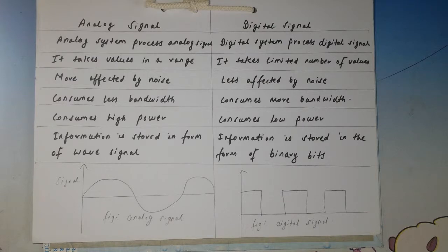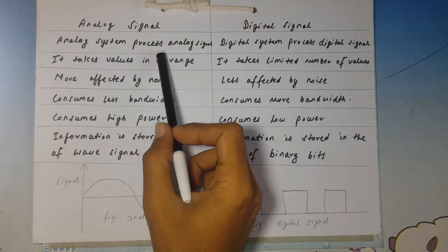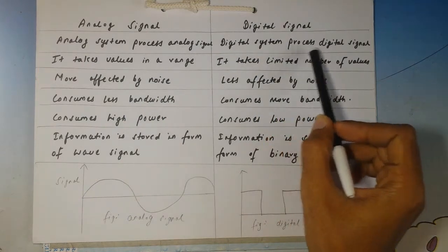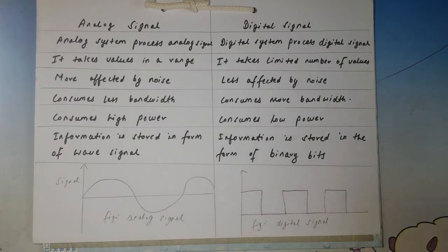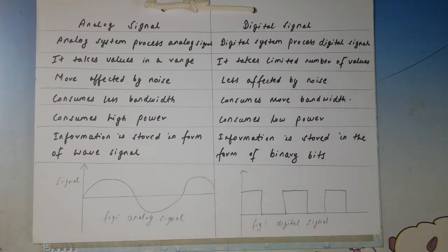The first difference is that an analog system processes analog signals and a digital system processes digital signals. For example, consider a thermometer — there are two types: one with a continuous scale showing values like 98.1, 98.2, and so on, which is analog, and another that gives discrete numeric values like 98 or 97 degrees, which is digital.